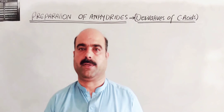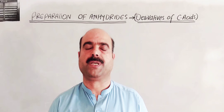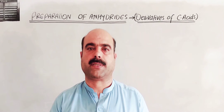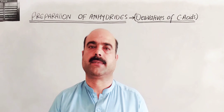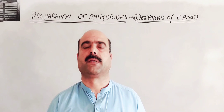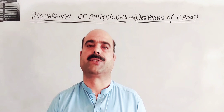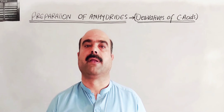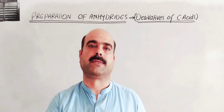Bismillahirrahmanirrahim. Dear students, Assalamu Alaikum. Welcome back to my YouTube channel Nasibzada Triple S. Today I am going to discuss a new topic from Chapter number 20: Carboxylic Acids and Their Derivatives, Class Second Year. Our topic main heading is: The Chemical Reactions of Carboxylic Acids. We are going to look at carboxylic acid derivatives, specifically the preparation of carboxylic acid derivatives.